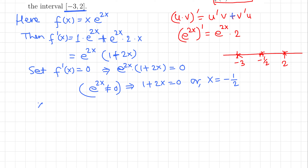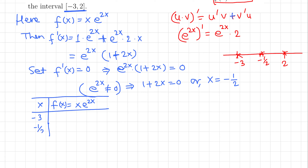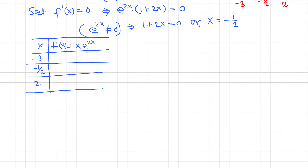Let's make a table with x values and f(x) = x·e^(2x). The x values are -3, -1/2, and 2. Plugging in x = -3: f(-3) = -3·e^(-6) = -3/e^6, which is a very small negative number, close to zero. Plugging in x = -1/2: f(-1/2) = -1/2 · e^(2·(-1/2)) = -1/2 · e^(-1) = -1/(2e).